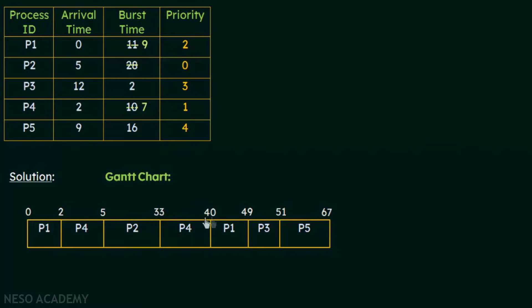P4 gets the CPU and executes for its remaining 7 milliseconds — from 33 up to 40ms. After P4 completes, the remaining processes are P1, P3, and P5 with priorities 2, 3, and 4 respectively. The highest priority among them is P1 with priority 2. So P1 gets the CPU at the 40th millisecond and executes for its remaining 9ms — up to the 49th millisecond.